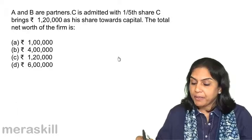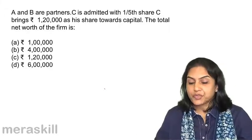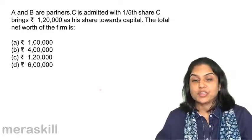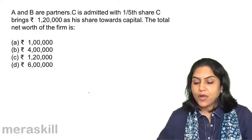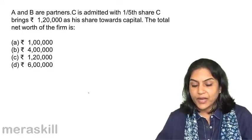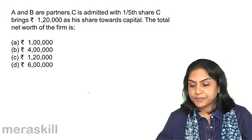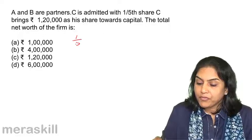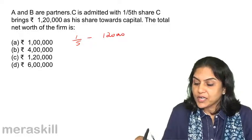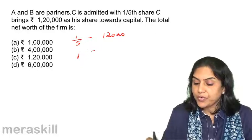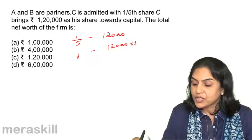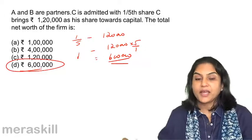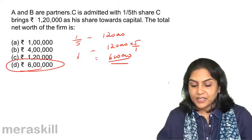Next. A and B are partners. C is admitted with a one-fifth share. C brings $1,20,000 as C's share towards capital. The total net worth of the firm is: A. 1 lakh. B. 4 lakh. C. 1 lakh 20,000. D. 6 lakh. Since one-fifth share equals $1,20,000, the full share equals $1,20,000 × 5 = $6,00,000. The total net worth is 6 lakh. Correct answer: option D.